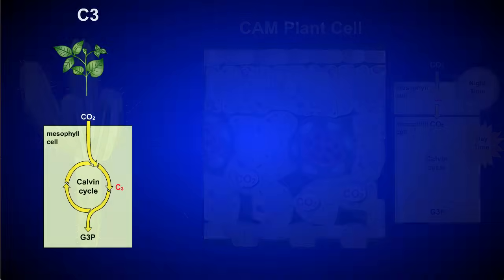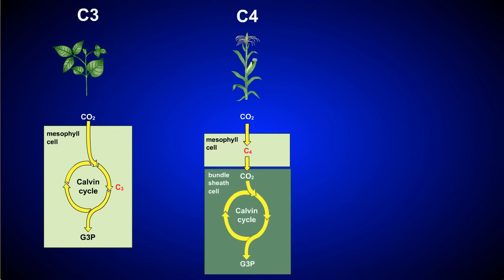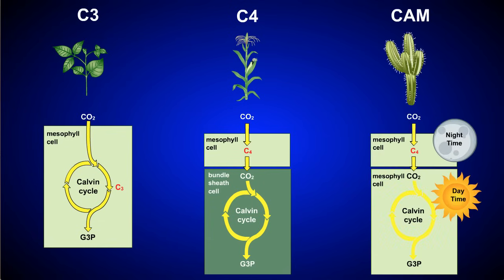Let's do a quick review. During C3 photosynthesis, CO2 is taken up and transported directly to the Calvin cycle. The C4 pathway alters the location of photosynthesis, and the CAM pathway changes the timing. Both of these adaptations allow some plants to survive in environments that are less than ideal for the typical C3 plant.